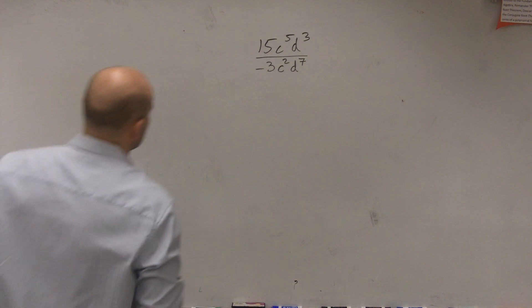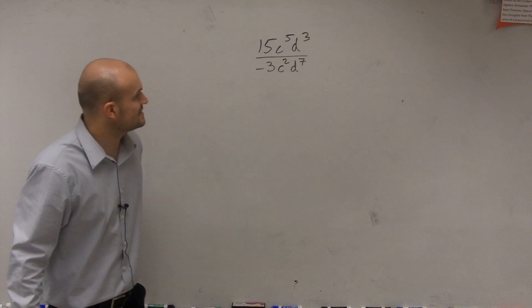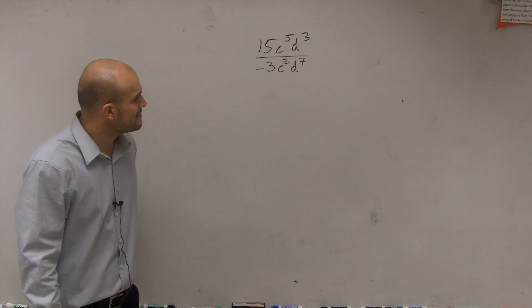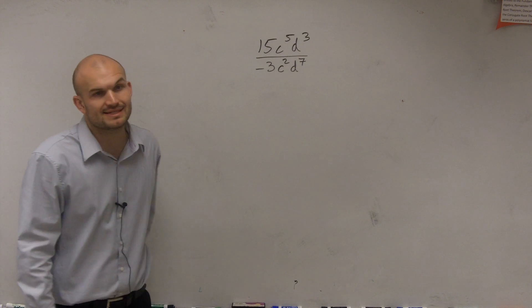All right, so to simplify a problem like this, we have 15c to the fifth d to the third divided by negative 3c squared d to the seventh.